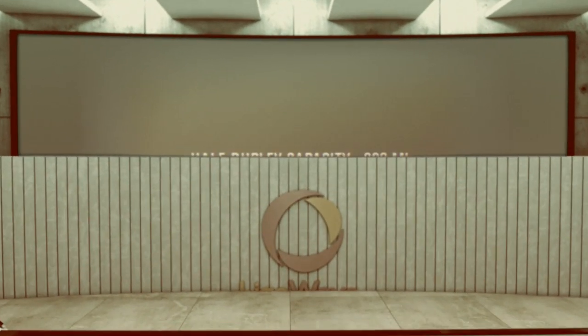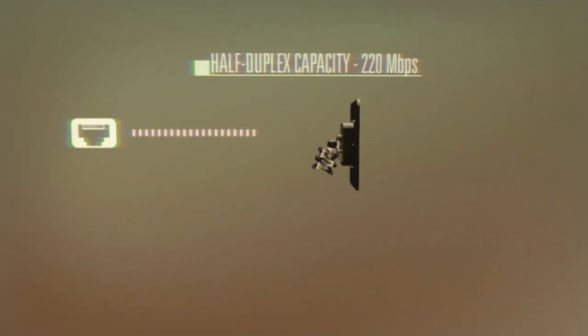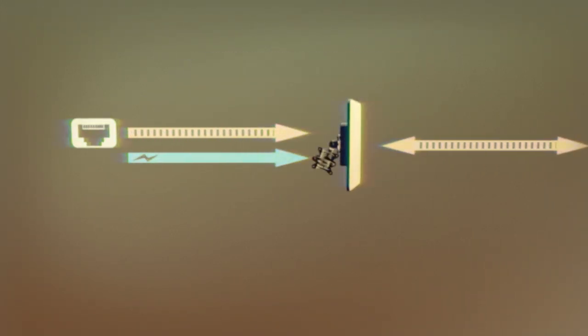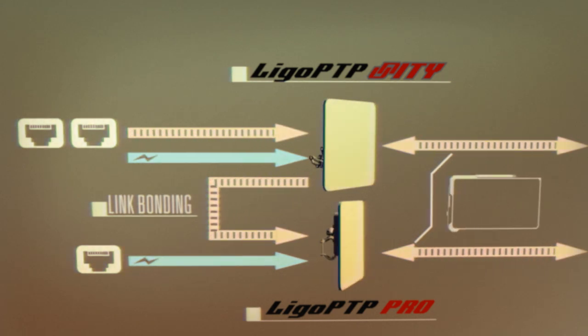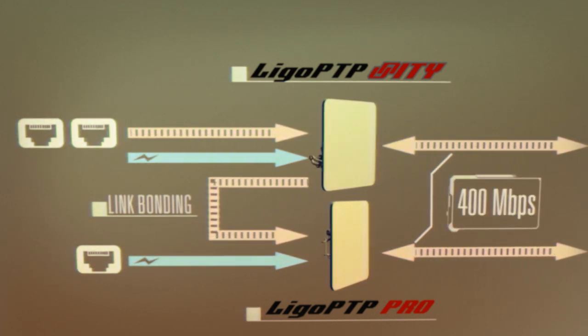The maximum capacity of a Unity link is 220 megabits per second half duplex. It has a second Ethernet port to bond two links together and increase the capacity of your link to 400 megabits per second